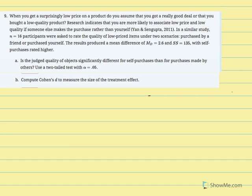The results produced a mean difference equal to 2.6 with a sum of square deviations equal to 135, with self-purchases rated higher. Is the judged quality of objects significantly different for self-purchases than for purchases made by others? Use a two-tailed test with alpha equal to 0.05.